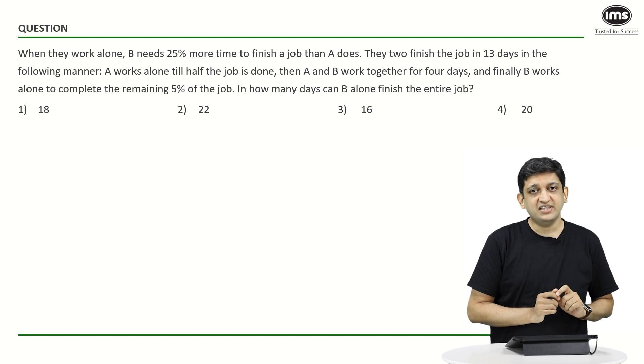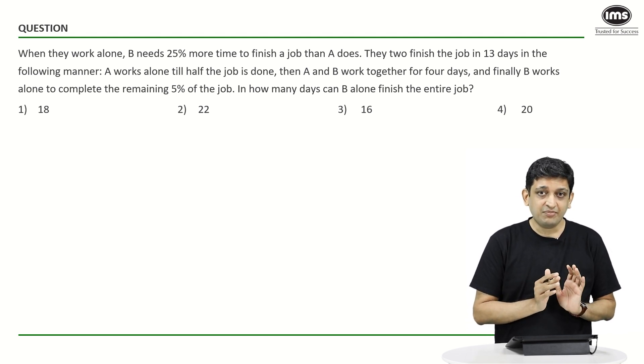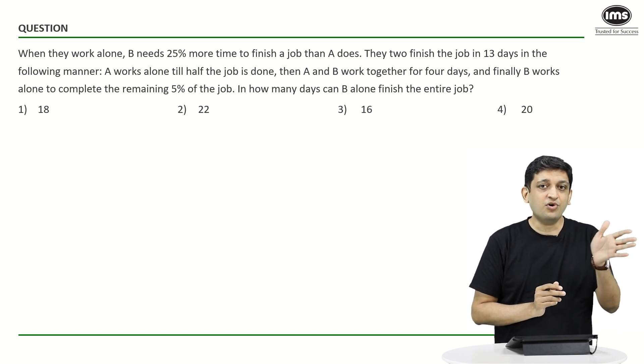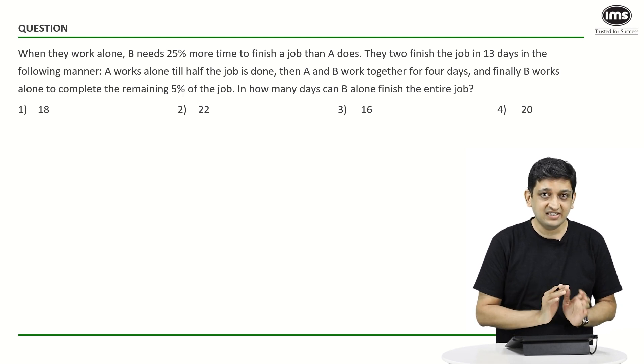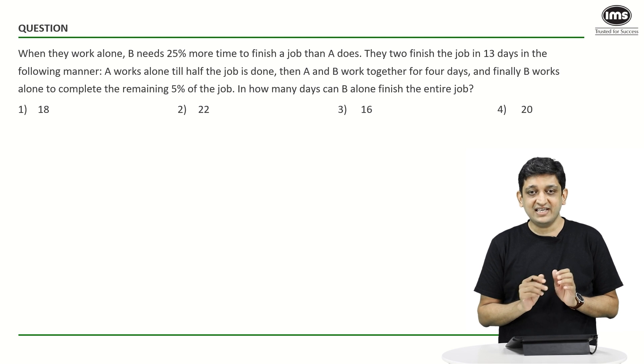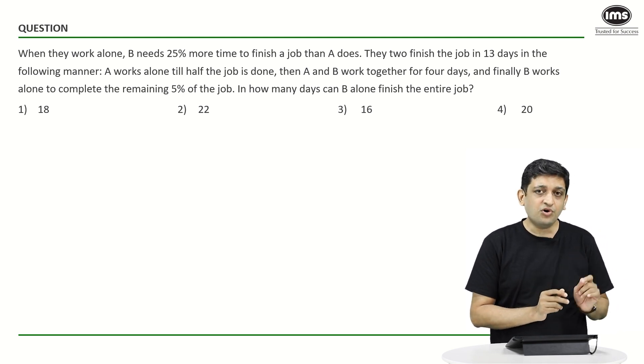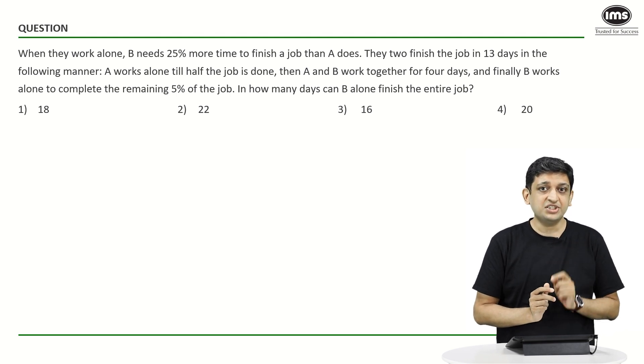The other way to think about it is, whatever happens, B is taking 5 fourth of the amount of time that A is taking to finish this job. That is the thing that is meant by 25% more time. So whatever number of days A takes, B will take 5 fourth of these number of days.